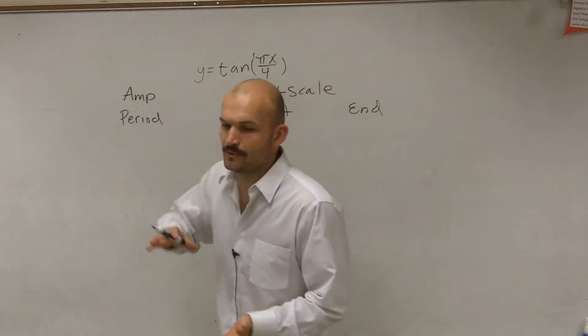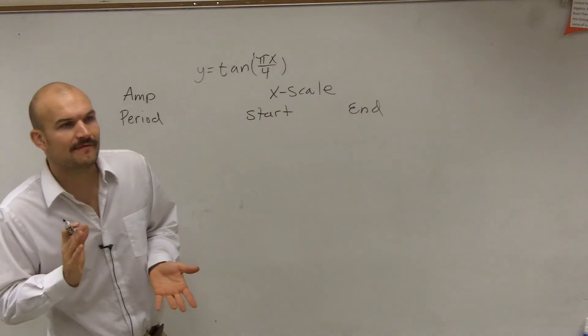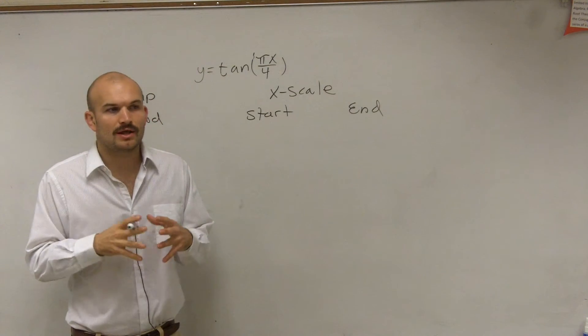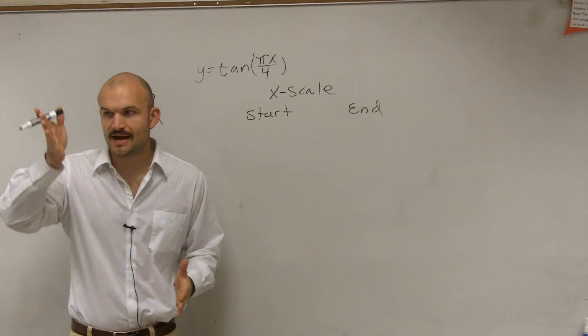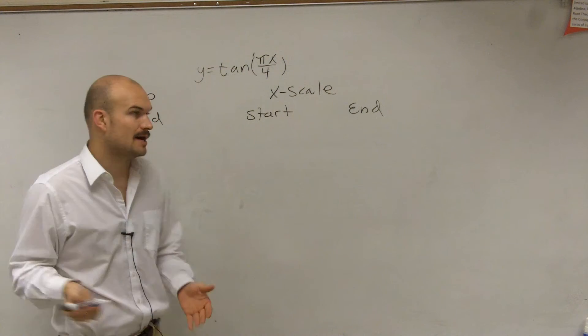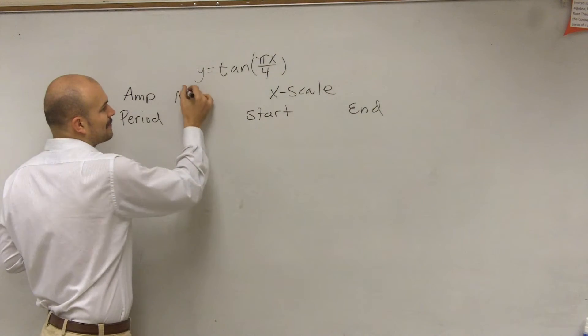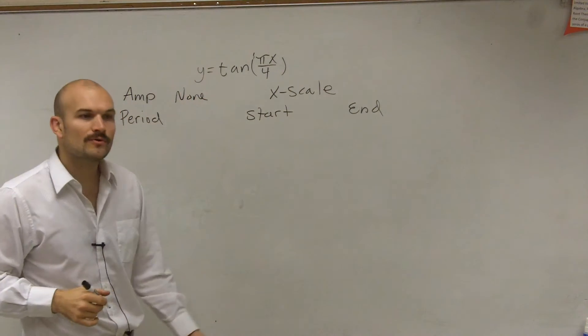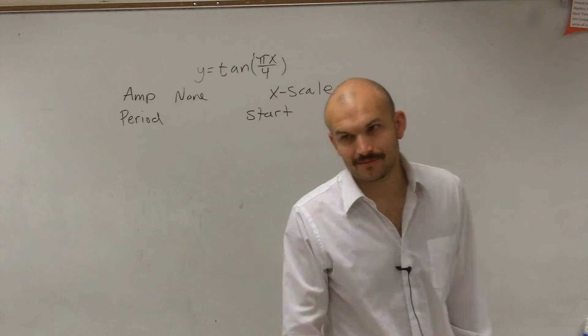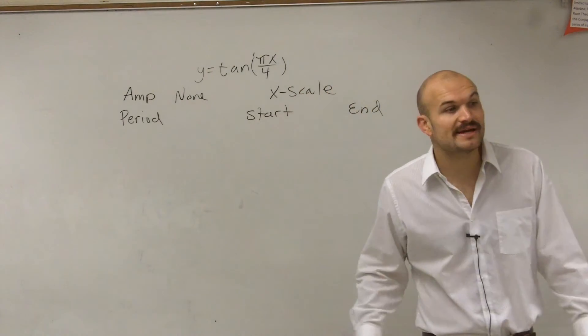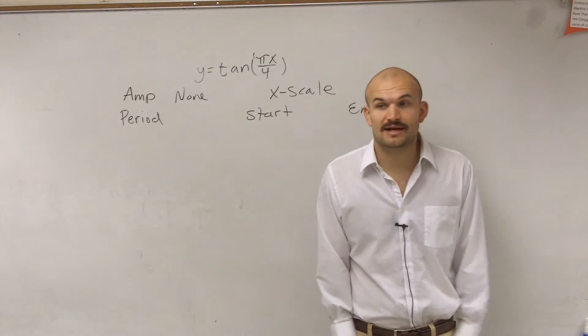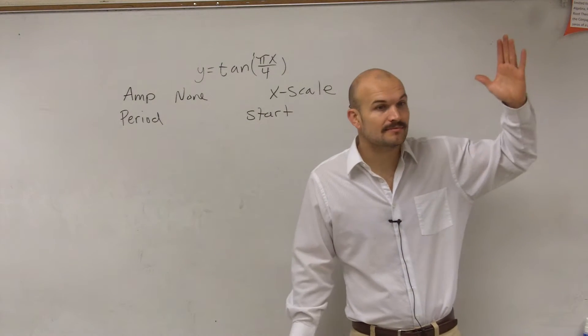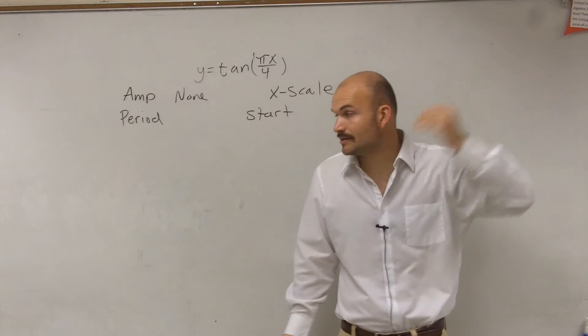Now, the amplitude, remember, was half the distance between the max and the minimum point. Well, if you looked at the parent graph of tangent and cotangent, what we noticed is those graphs go infinitely up and infinitely down. So for this one to find amplitude, we don't need to worry about an amplitude because there's not going to be an amplitude. There's not going to be an amplitude because it's infinite distance between the max and the minimum.